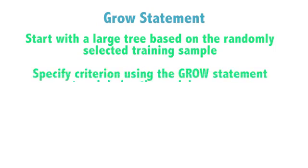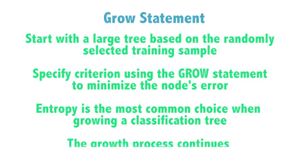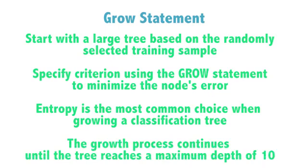Each criterion can be used to assess candidate splits for each node. You select a criterion by specifying it as an option in the GROW statement. Entropy is the most common and highly recommended choice when growing a classification tree; Gini is another common option. Based on the GROW criterion selected, the growth process continues until the tree reaches a maximum depth of 10 split levels. The result is often a large tree that overfits the data and is likely to perform poorly by not adequately generalizing to new data.